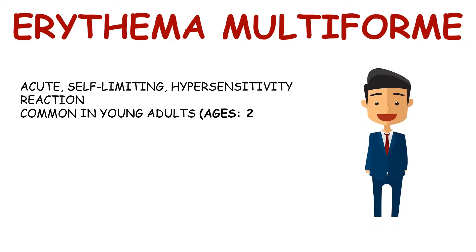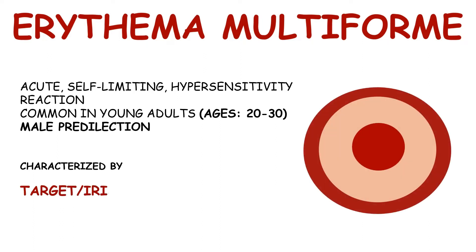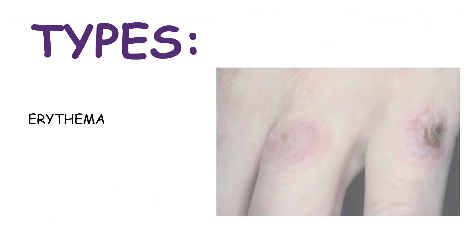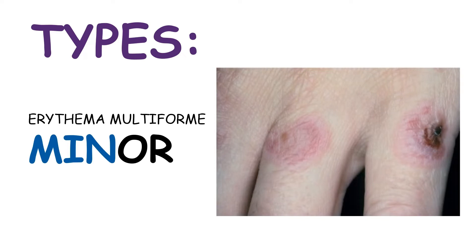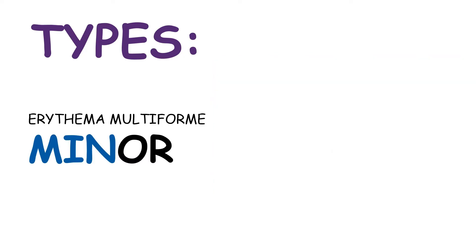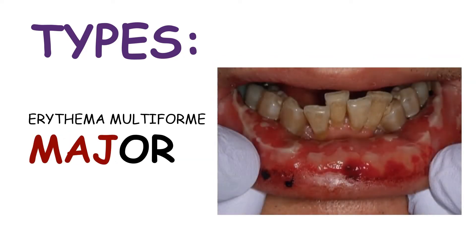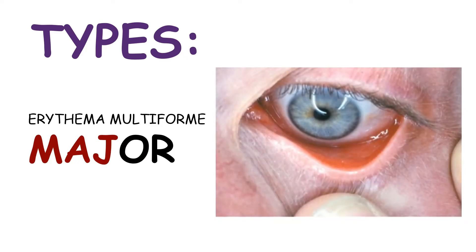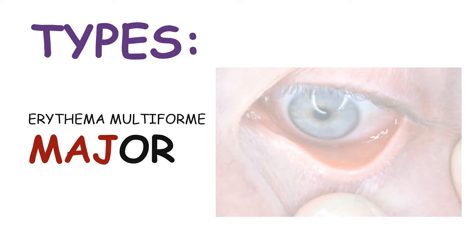Erythema multiforme is an acute self-limiting hypersensitivity reaction, common in young adults aged 20 to 30 years with a slight male predilection. It is characterized by target, iris, or bullseye lesions on skin and crusting hemorrhagic ulcerations. Types include erythema multiforme minor, which results in target cutaneous lesions with only one mucosal site involved, whereas in erythema multiforme major, two or more mucosal sites are involved — including the oral cavity, eye, genitalia, esophagus, and respiratory tract.